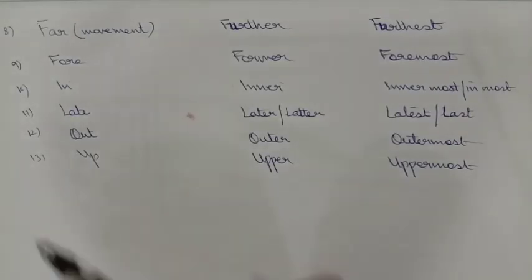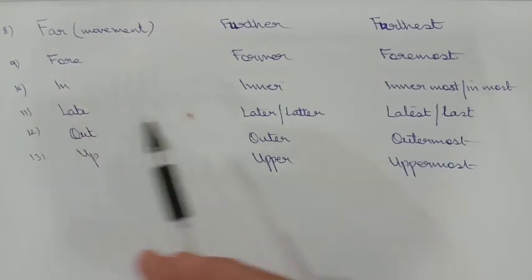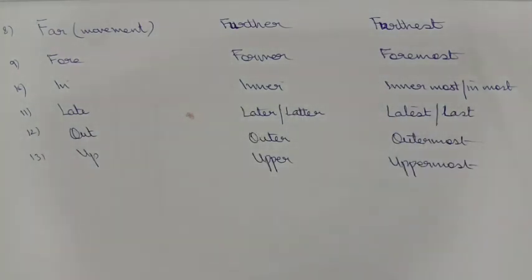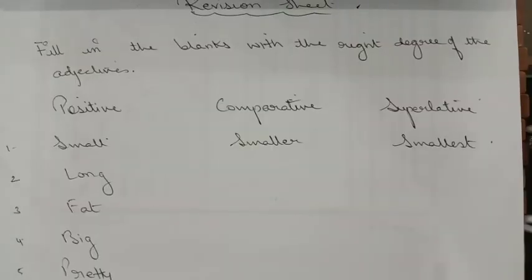More irregular adjectives: 'far' — 'further' — 'furthest'; 'fore' — 'former' — 'foremost'; 'in' — 'inner' — 'innermost' or 'inmost'; 'late' — 'later' — 'latest'; 'out' — 'outer' — 'outermost'; 'up' — 'upper' — 'uppermost'. Keep revising them — these are all irregular adjectives and they don't follow any rules, so you simply have to memorize them.